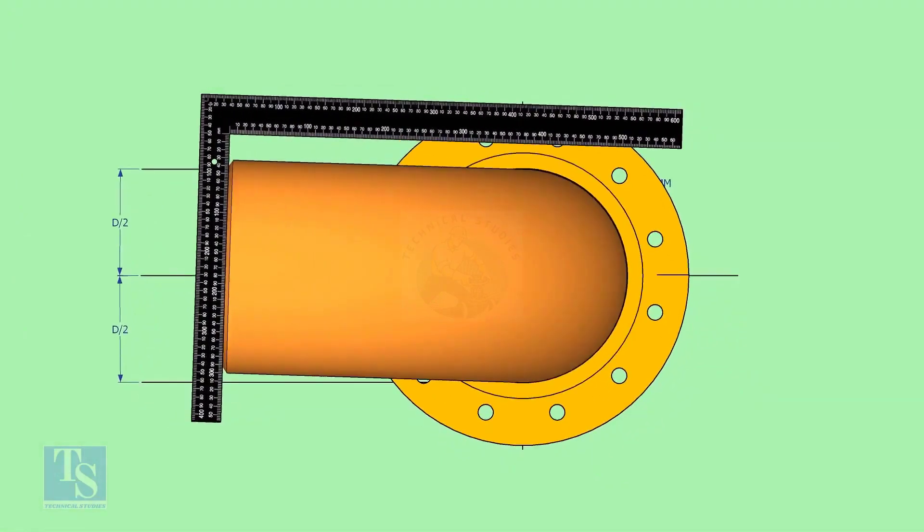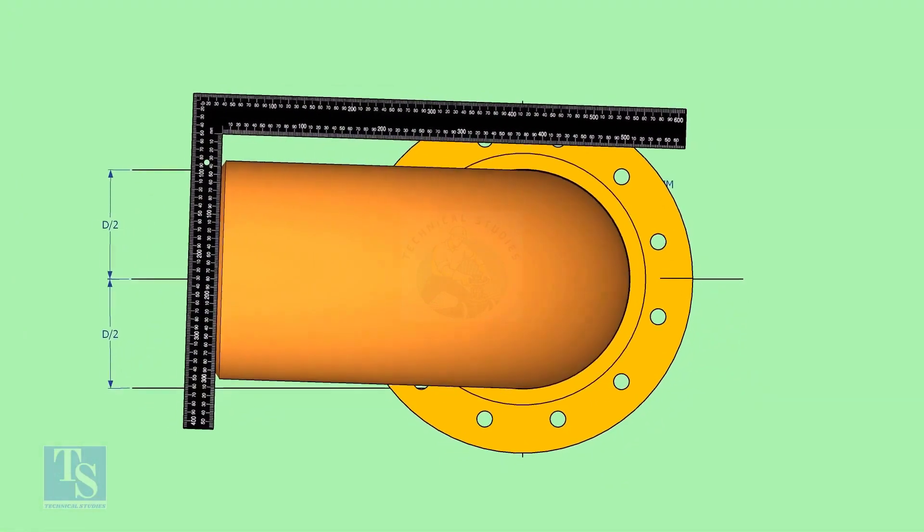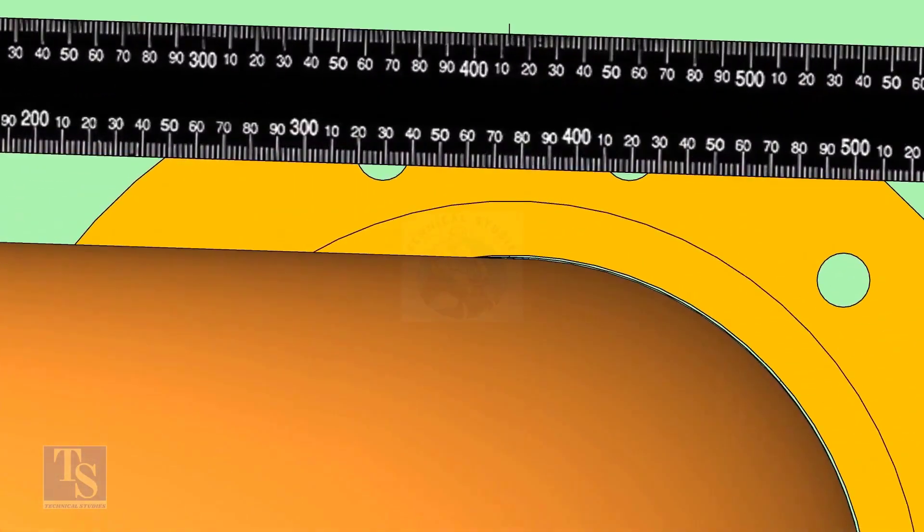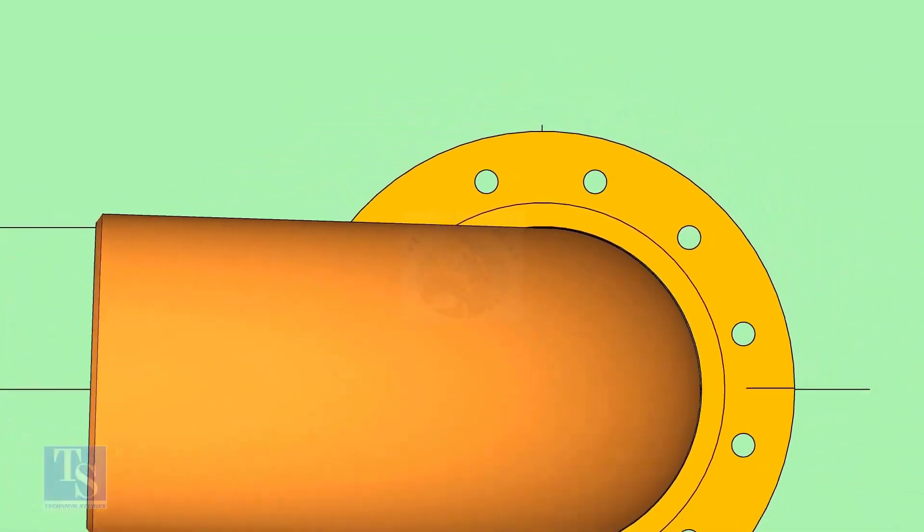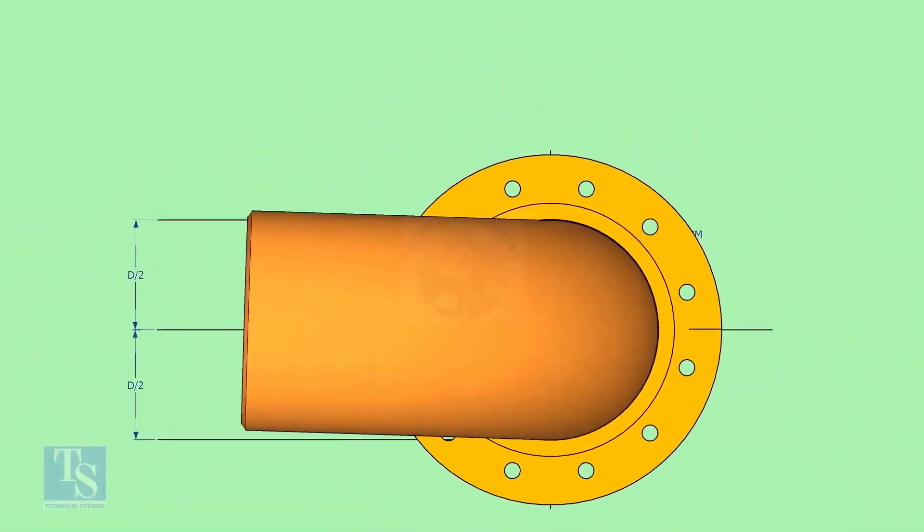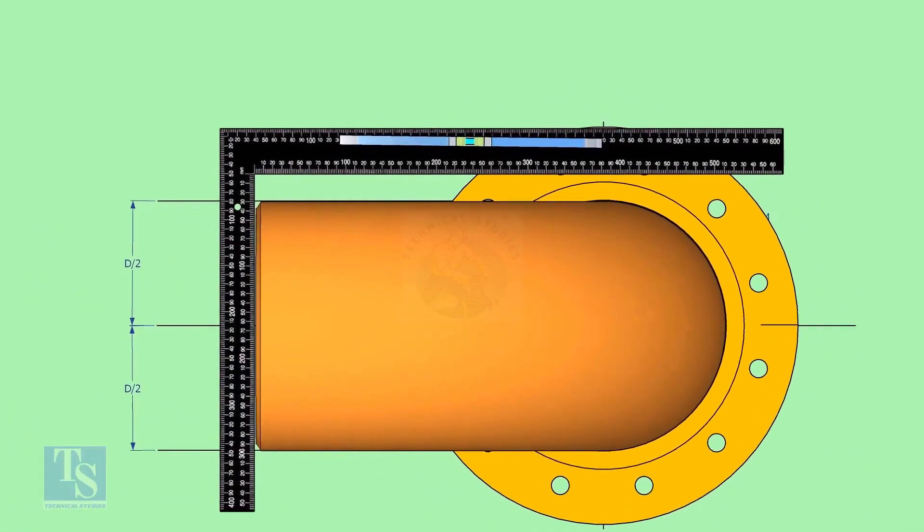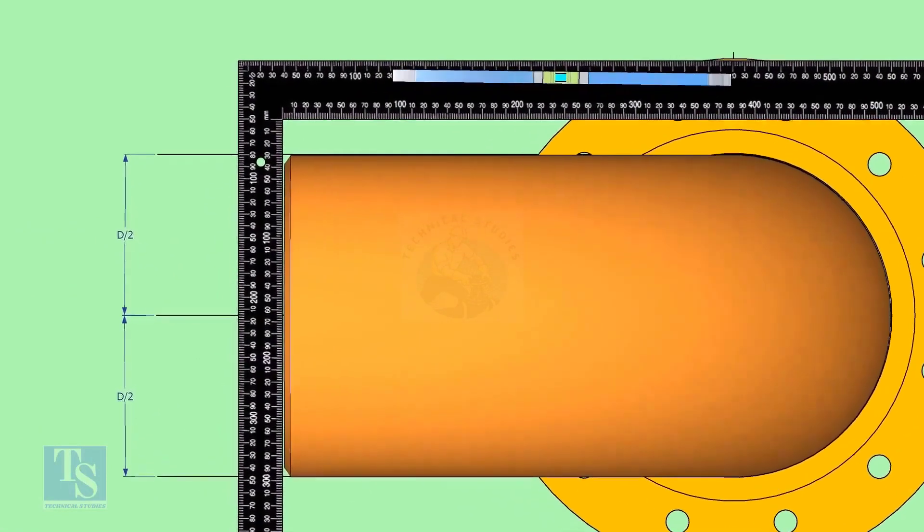Hold a right angle as shown and check if the reducer is turned. In this case, the elbow centerline is not parallel with the centerline of the flange. Rotate the elbow and correct the centerline.